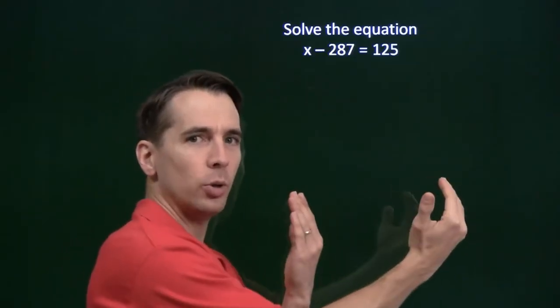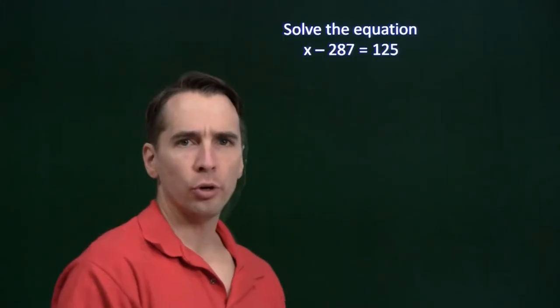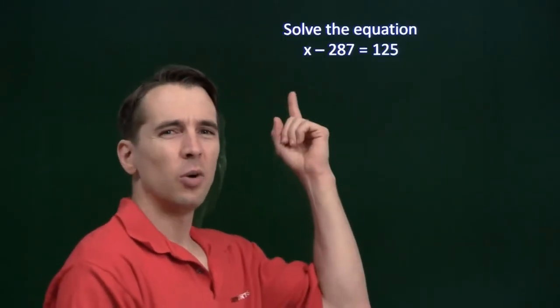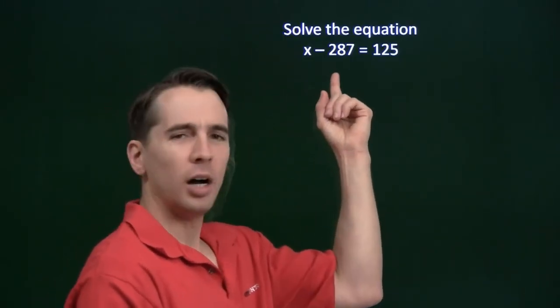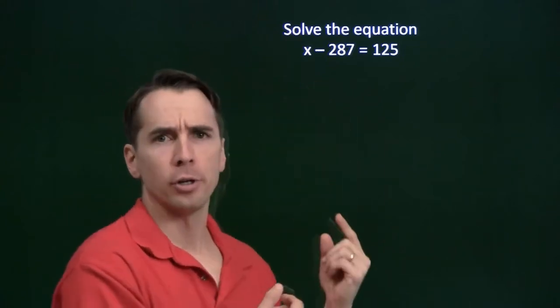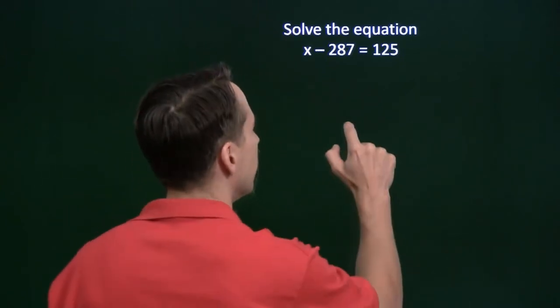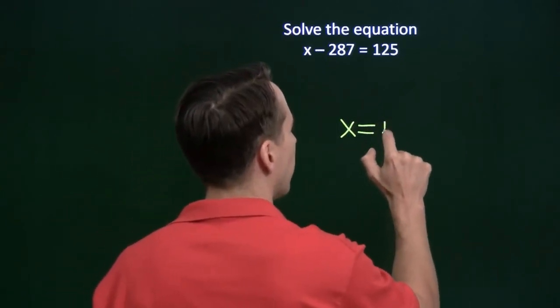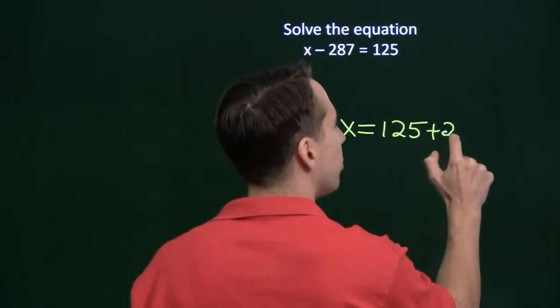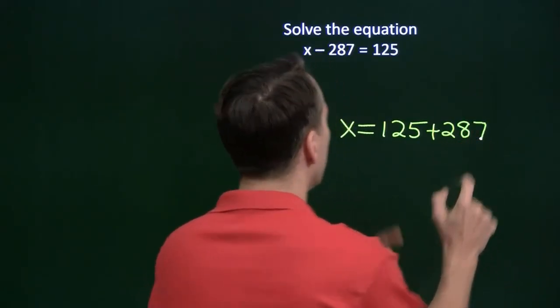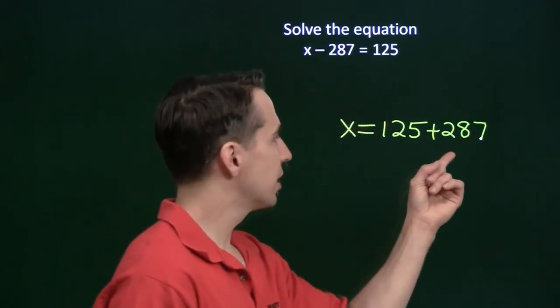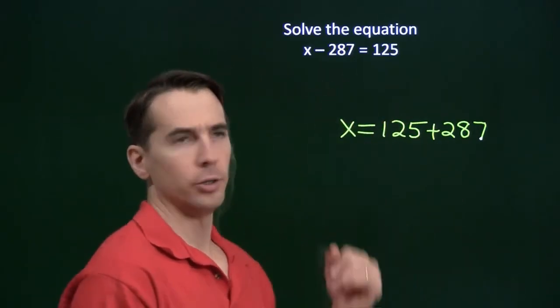X is the number that we subtract 287 from in order to get 125. So x must have started 125 larger than 287. So x must have just started off as 125 plus 287, so that when we subtract this 287 off, we're left with 125.